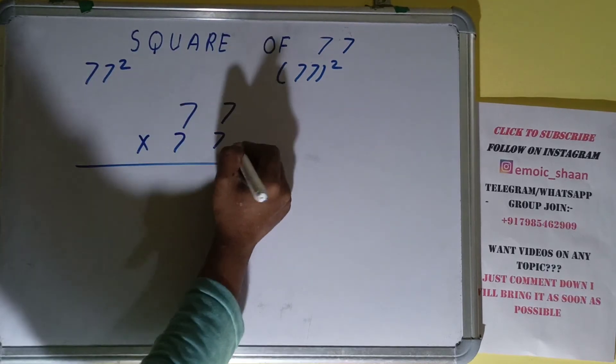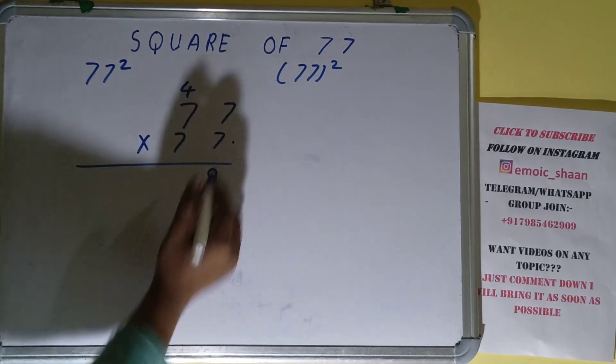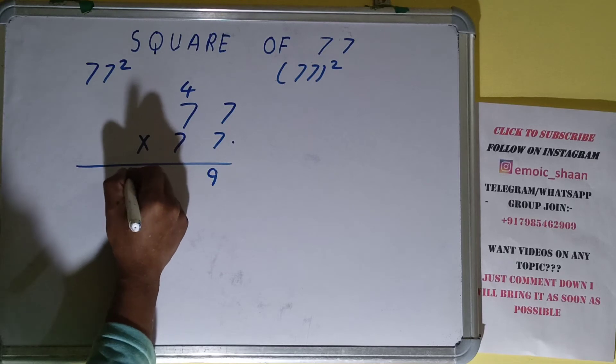Let's start with this. 7 times 7 is 49. 9 over here, 1 carry, 4 carry. 7 times 7 is 49 plus 4 is 53.